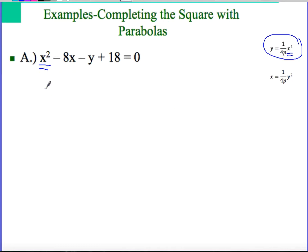Previously, when we did completing the square, we put all the x's together and moved the constant over to the other side, meaning move the 18 over. In this case with parabolas, in addition to moving the 18 over, I'm also going to move the y because I don't need to use the y as I complete the square. I am only completing the square on the x's. So I'm going to add y to the other side and subtract 18.